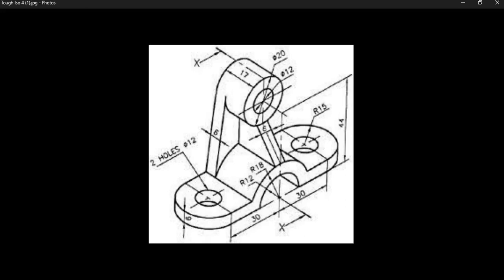This is a video for how to go about creating Tough ISOs number four. When you look at this object, the first thing we want to start off on is by creating a shape that is flat on the front, that will have these curves that will be extruded back a distance.